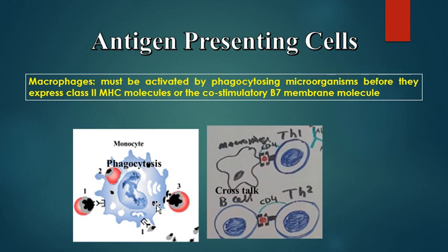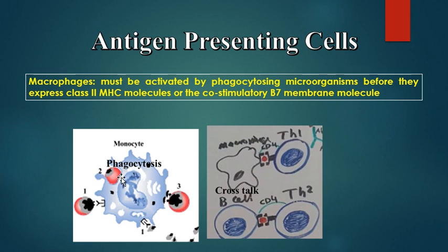In contrast, macrophages must first be activated by phagocytosing microorganisms before they express MHC class II molecules or co-stimulatory molecules like B7. This activation can be antibody-dependent, antibody-independent, or complement receptor-dependent.